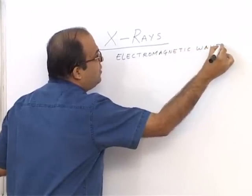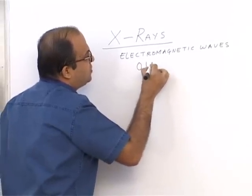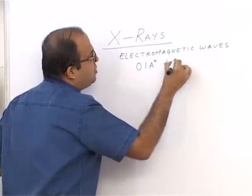X-rays have a wavelength ranging from 0.1 Angstroms to 100 Angstroms.